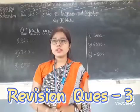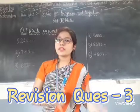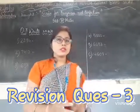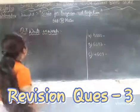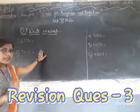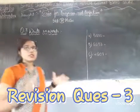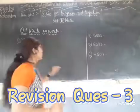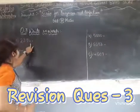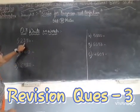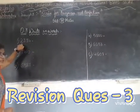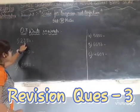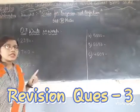Question number 3 is: write in words. A number is given to you and you have to write it in words. Now, before writing in words, you have to look at the digits and the place value — 10, 100, 1000. For example, 2,354.